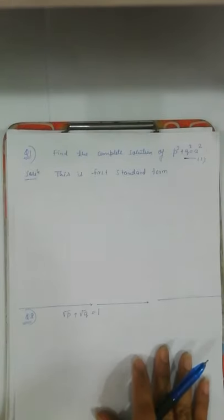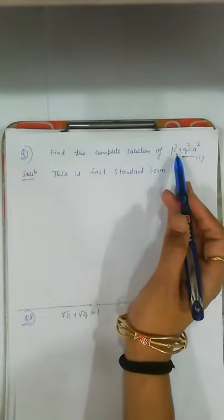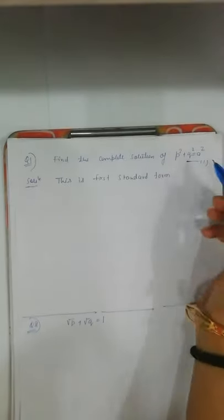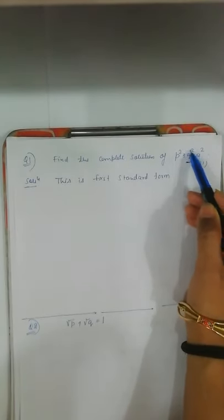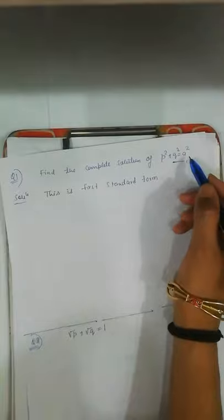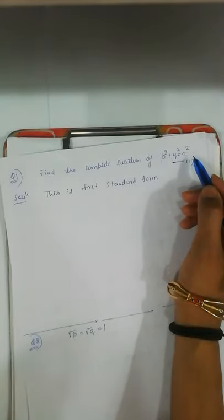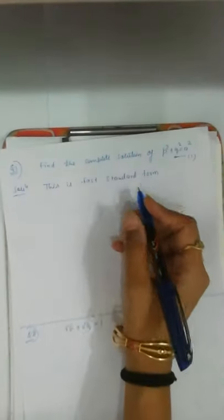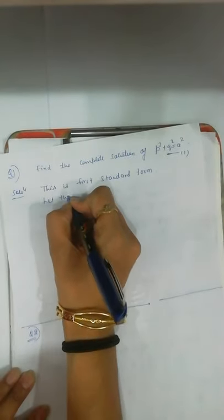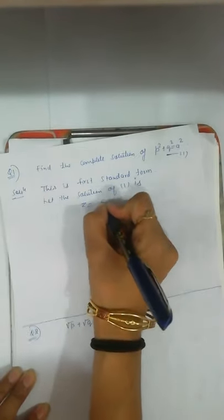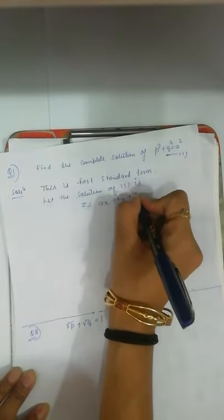Let us see a problem based on Standard Form 1. Suppose we have to find the complete solution of p² + q² = M². From this equation you can see it is non-linear because the powers of p and q are 2. Also, this equation falls under Standard Form 1 because the variables x, y, and z are absent. So this is Standard Form 1.